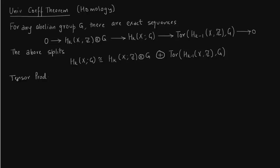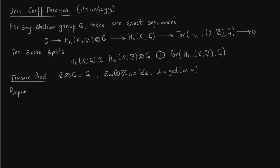The first tensor product property we use most is: Z tensored with G gives you G. So Z tensor Z2 gives Z2. The second property is: Z_m tensor Z_n gives Z_d, where d is the greatest common divisor of m and n.